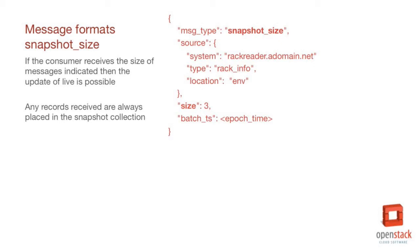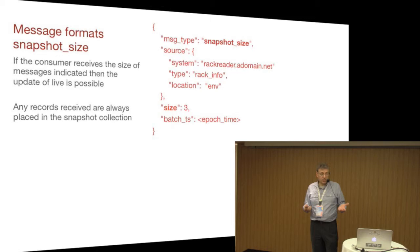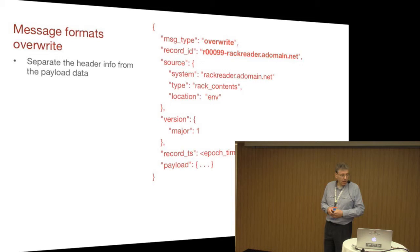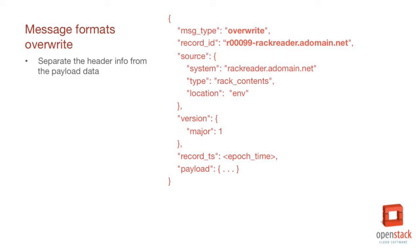For the snapshot size message, it's pretty much the same as the other header except the message type is snapshot size, and there's just a single item that says size — in the example it's three. For overwrite, you have to provide all the information and the payload, but notice you've got the same record ID that you had in the other one, so you can tie the snapshot to the live connection to make sure the right data is being updated. With delete, it's exactly the same thing.